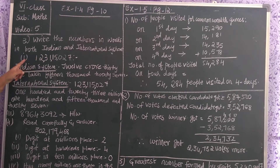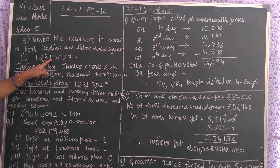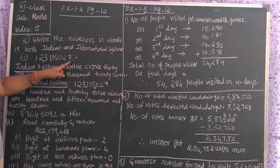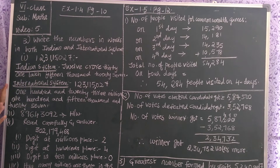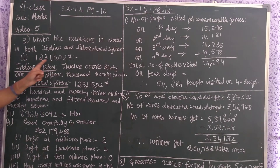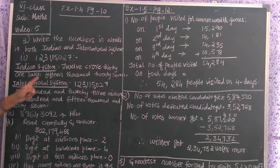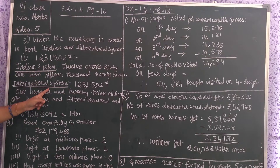The first question number is 1, 2, 3, 1, 1, 5, 0, 2, 7. I put the commas children — in the textbook commas are not there. First in Indian system I put the commas, then again in international system also I put the commas.